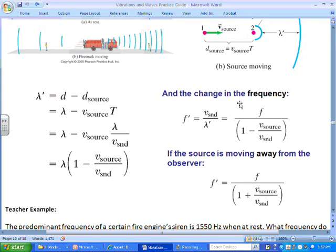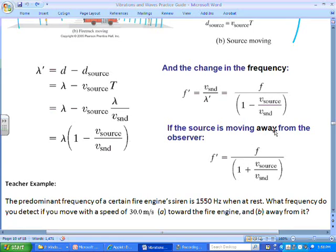Now if the source is moving towards you, then we get an increase in frequency. So we're dividing by this one minus v source over v sound term, and we should get a bigger number for f prime. And if the source is moving away from us, we're going to get a smaller number for frequency. We're going to shift the other way. So we're going to add this amount, the source speed divided by the sound speed.